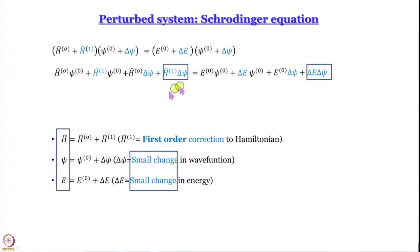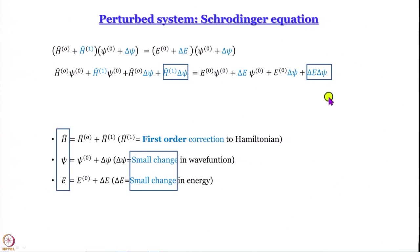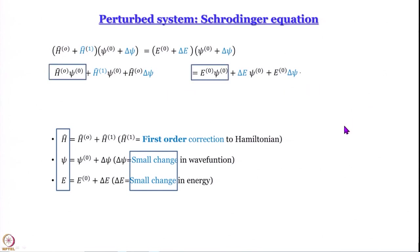We set up the Schrödinger equation in terms of H-hat psi and E. Since delta psi and delta E are small changes, H1-hat — the first order correction to the Hamiltonian — operating on delta psi, and delta E multiplied by delta psi, are products of small quantities and are therefore zero. We also said that H 0th operating on psi 0th equals E 0th multiplied by psi 0th, because that is the Schrödinger equation for the unperturbed system.